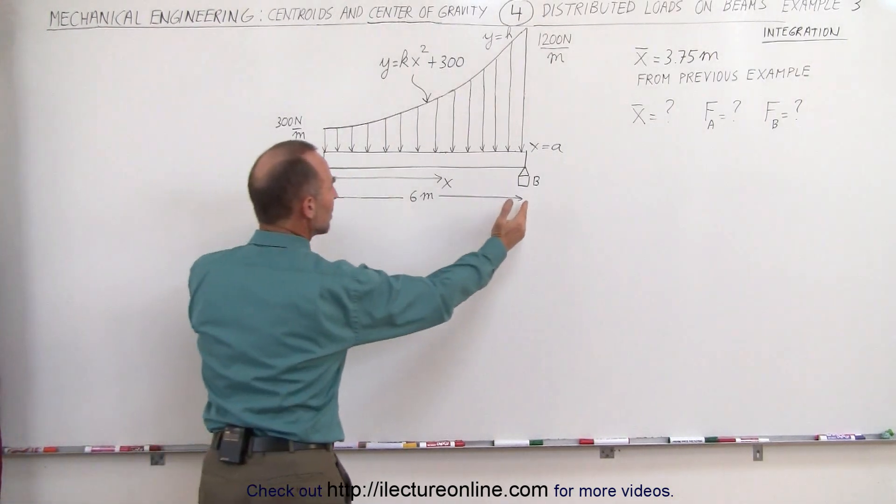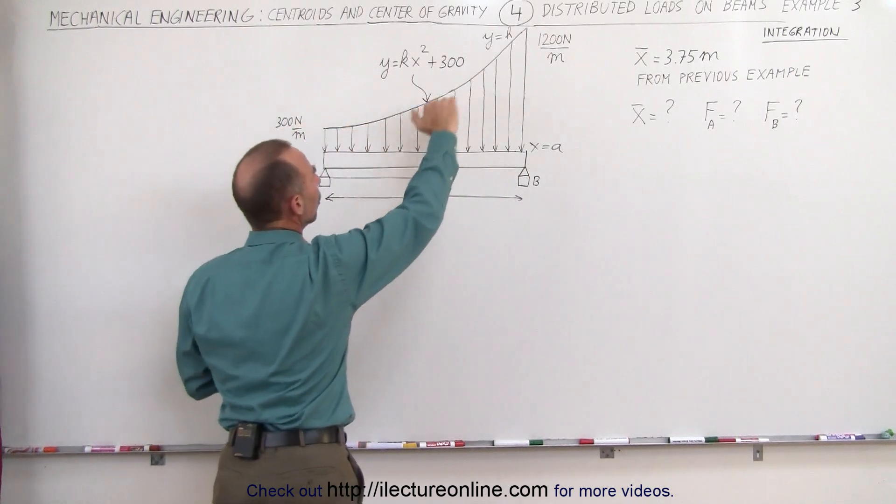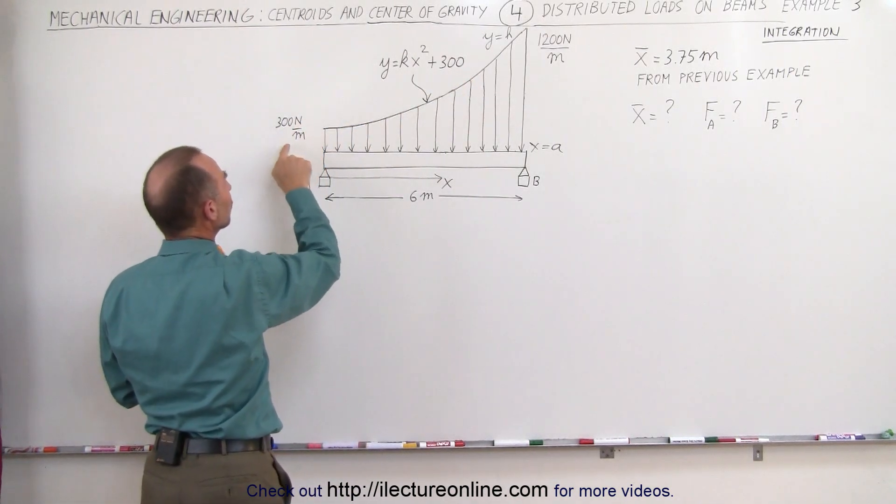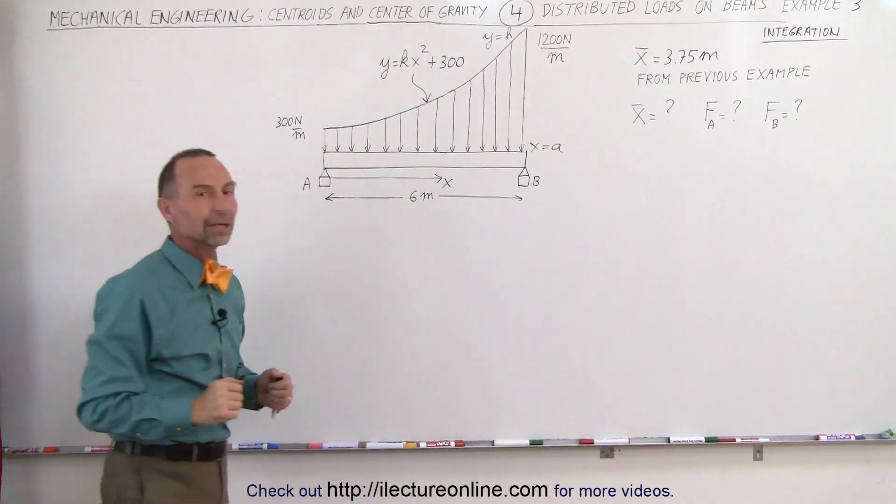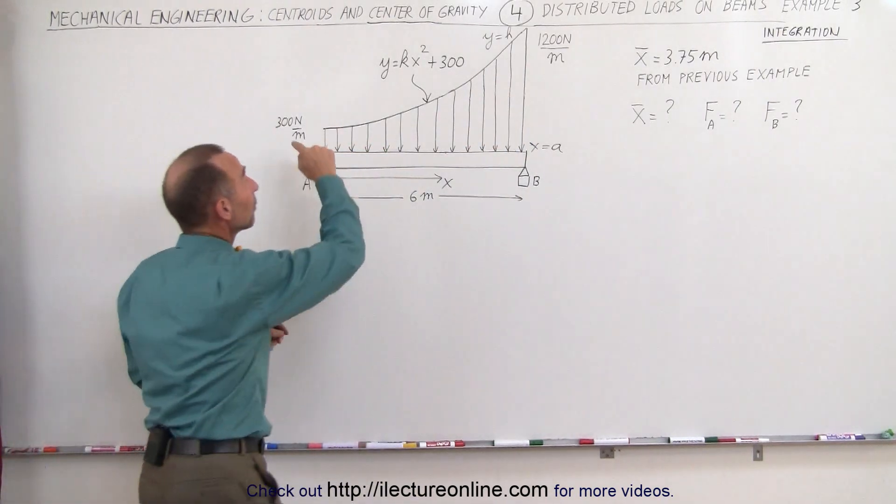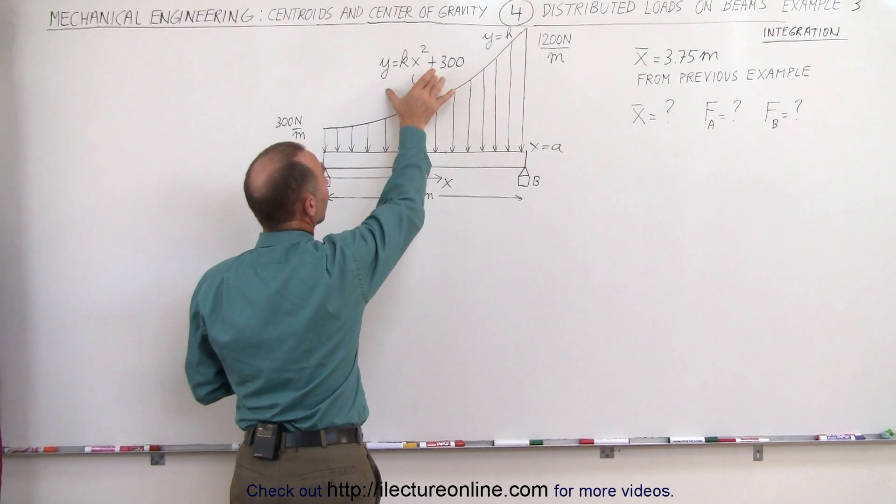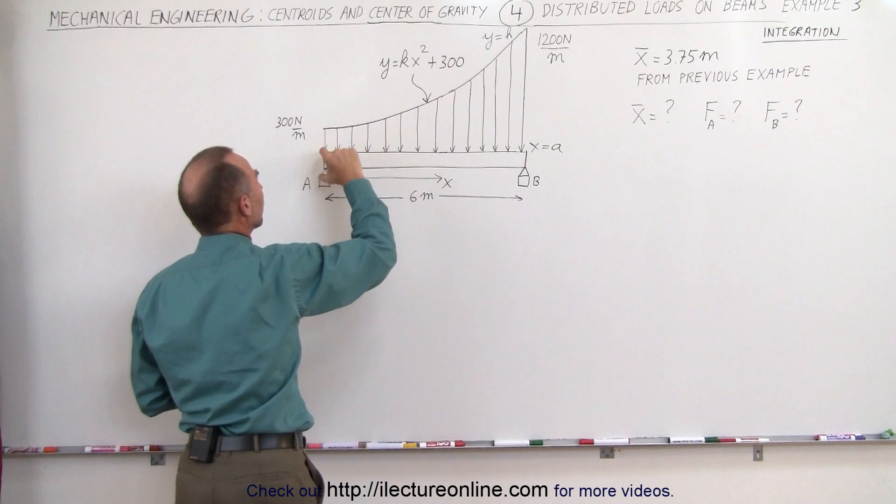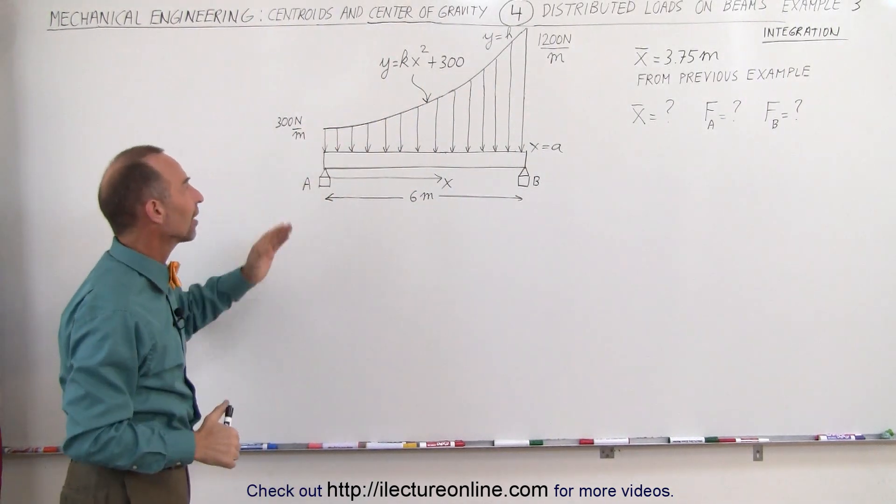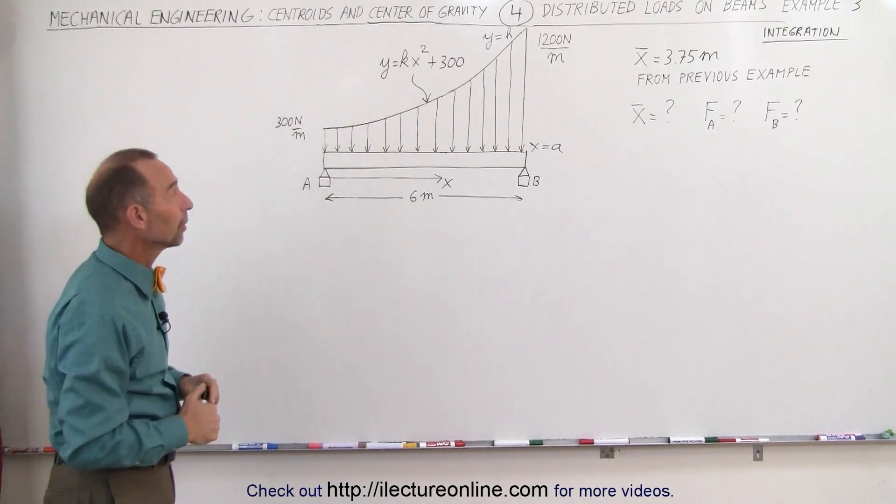Again, we have a beam that is 6 meters long. We have a distributed load that starts on the left side at 300 N per meter and ends on the right side at 1200 N per meter. The distributive load can be represented by a parabolic equation, y equals kx squared plus 300 because we started 300 above 0 at the left side right here. This is the vertex of the parabola.